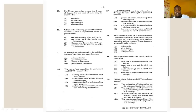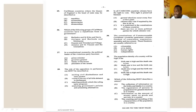Number twenty-nine says: in all CARICOM countries citizens have the right to vote — what preserves this right? A: general elections occur every four or five years, B: citizens only vote if required by law, C: it is enshrined in the constitutions of these countries, or D: there are two or more political parties. The constitution gives every citizen of a certain age the right to vote. The answer for number twenty-nine is C.